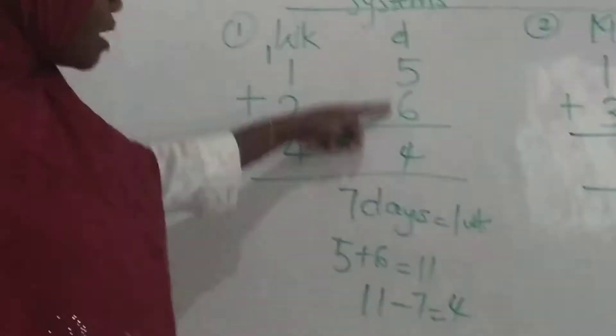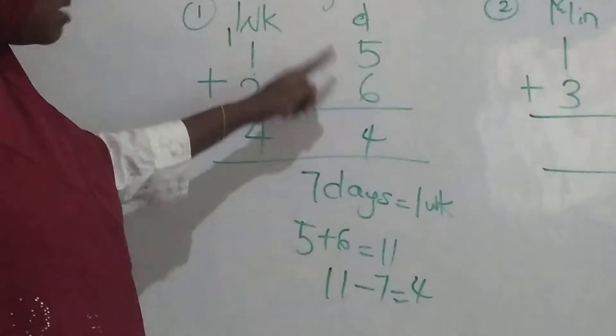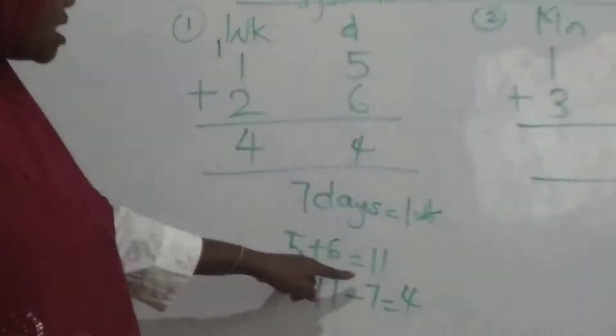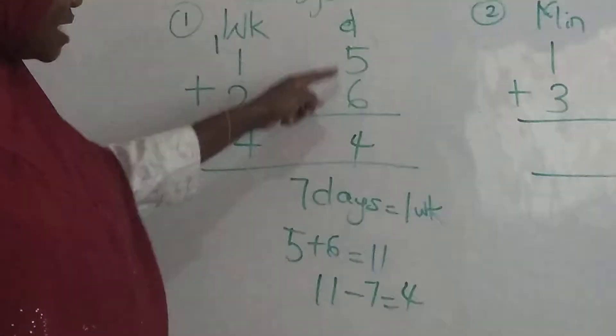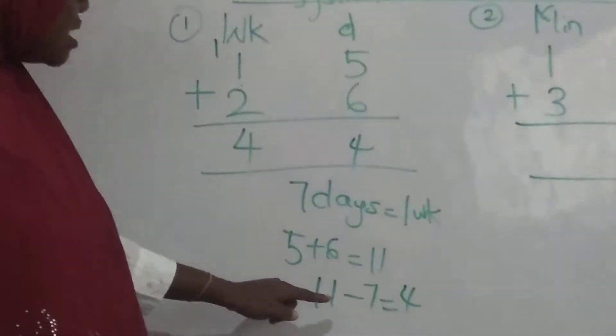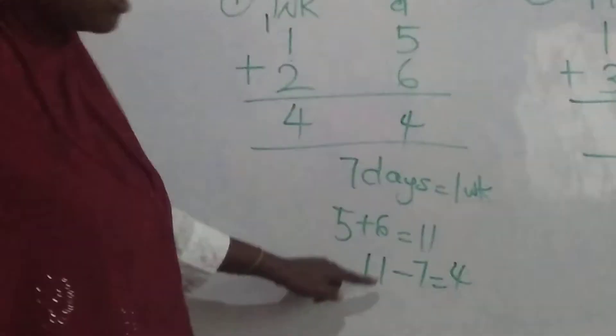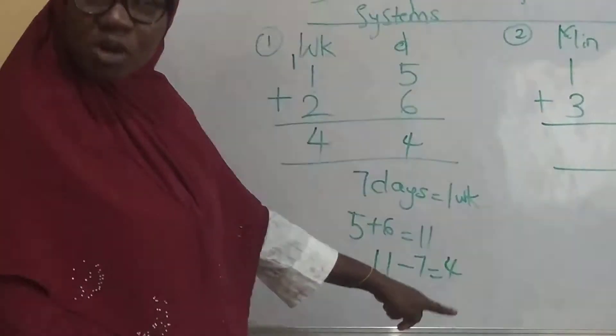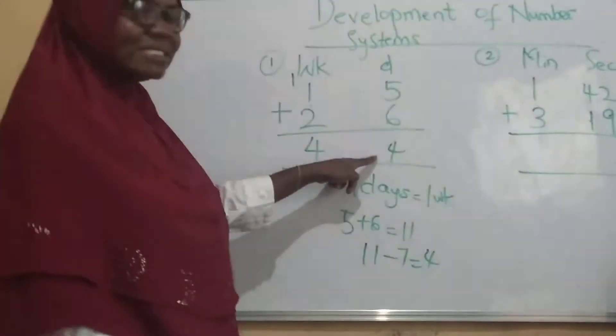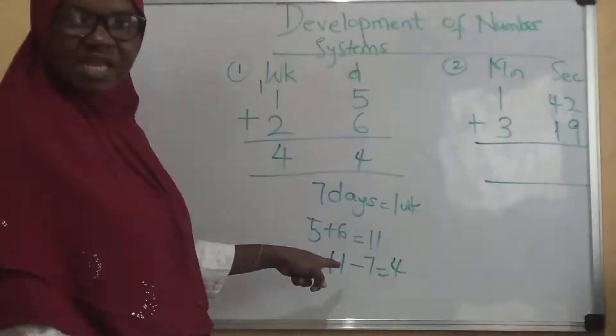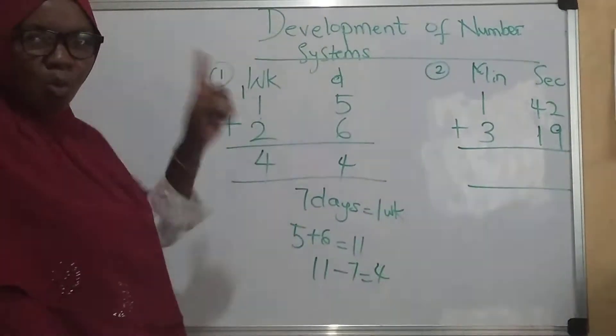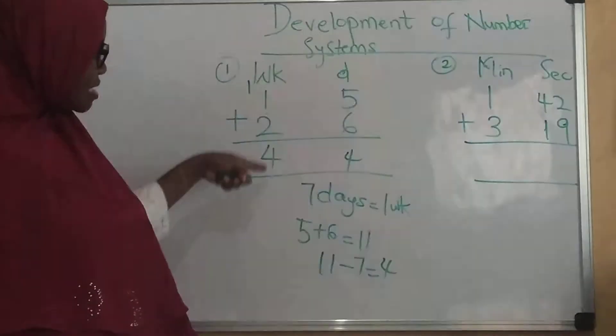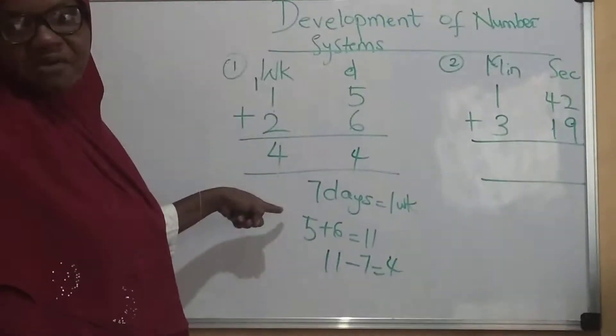Don't forget, once you are doing your addition, the moment it exceeds seven days, when you add this together it gives us eleven, you have to take away seven days from this eleven so that you can have four. That four you are going to put on that day. The seven that you took away from the eleven, you move it to the week side to become one week and then you add it to the subsequent number of weeks that you have.